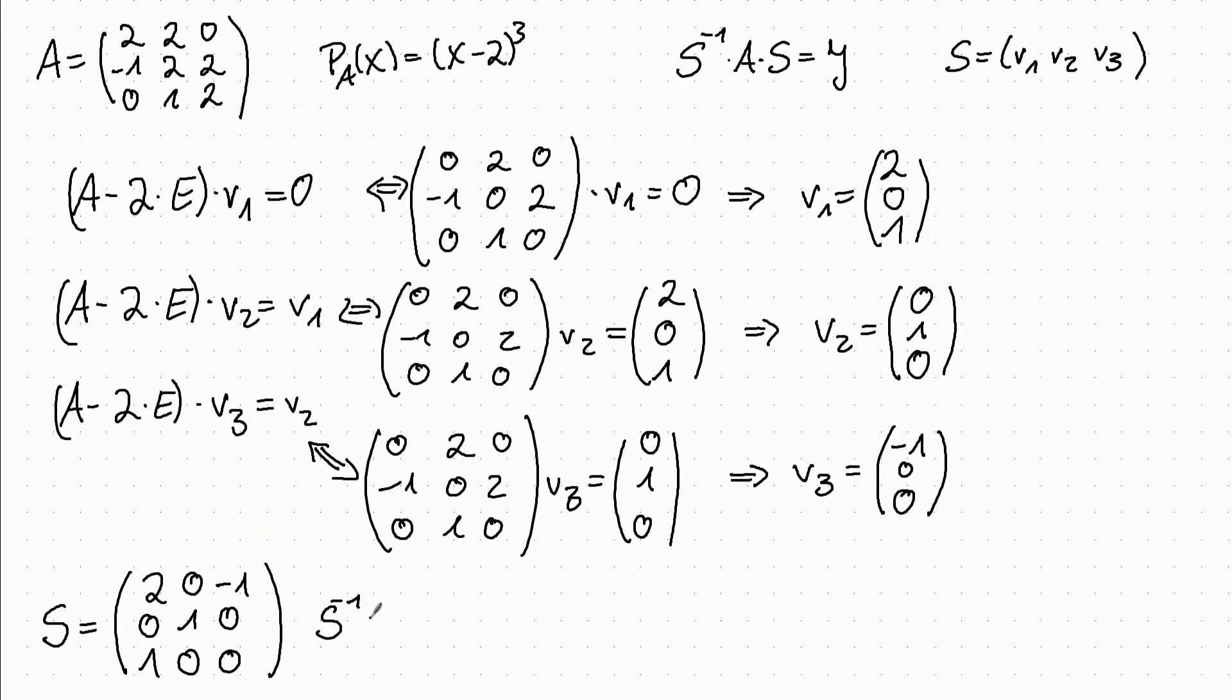And again we have to also invert the matrix, for example by Gauss algorithm. And we get [0, 0, minus 1; 0, 1, 0; 1, 0, 2].